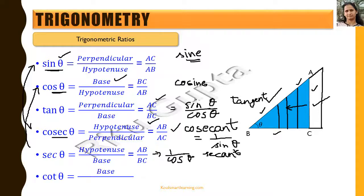The last trigonometric ratio is cot theta, which equals base upon perpendicular — that is BC by AC. This is nothing but 1 divided by tan theta, as we can see by definition. The full form of cot is cotangent.